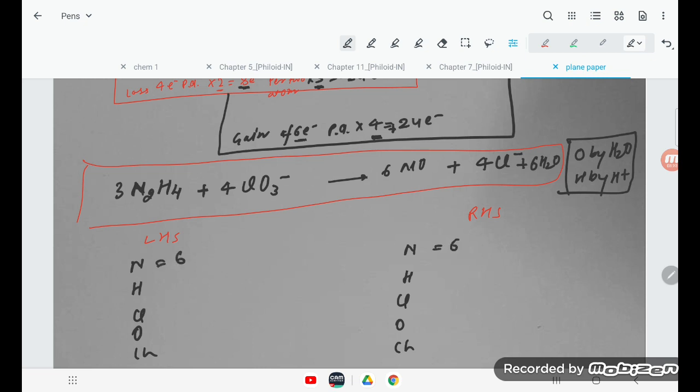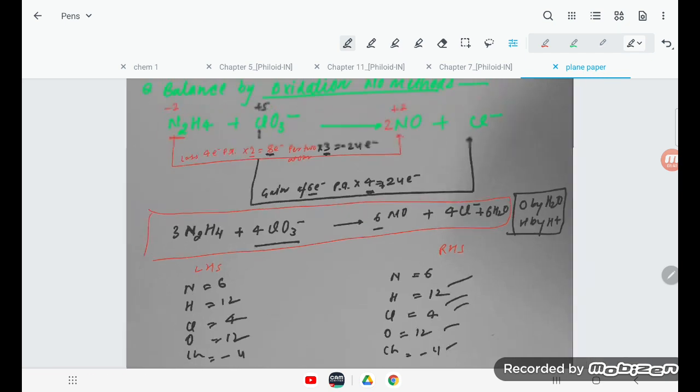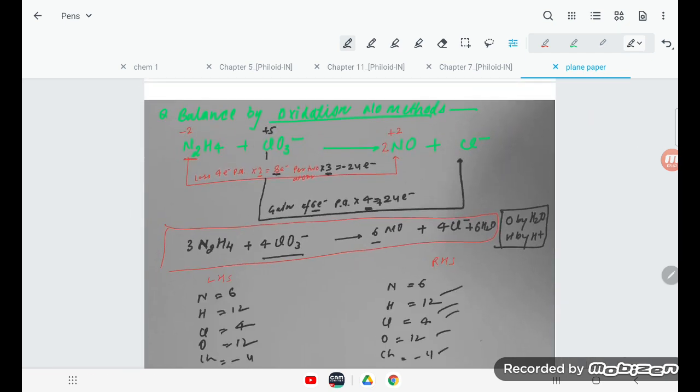How many nitrogen? 3 times 2 is 6, here is also 6. Hydrogen is 4 times 3 is 12, this side 6 times 2 is 12. Chlorine, how many are there? 4. This side again 4. Oxygen, 4 times 3 is 12, this side 6 here and 6 here, so that is 12. Charge, how much? 4 negative minus 4, this side again that is minus 4. So everything is balanced.